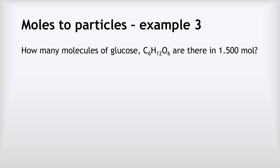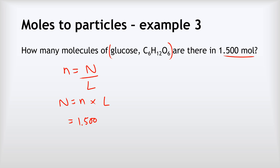Example 3: How many molecules of glucose are there in 1.500 moles? Again, the fact that it's glucose is irrelevant — just a distractor. Using N = n × L: 1.500 × 6.02 × 10²³ = 9.03 × 10²³ as our final answer.